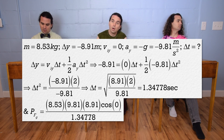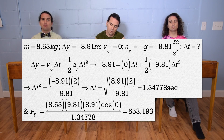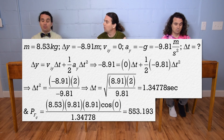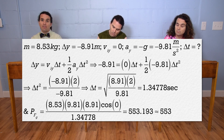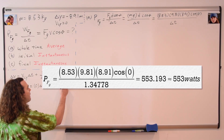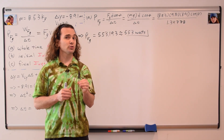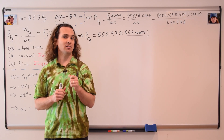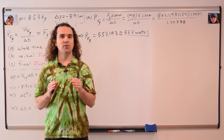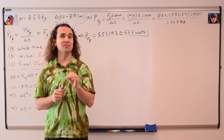Power delivered by the force of gravity equals 553.193, or with three significant figures, 553 watts — joules per second. That is the average power delivered by the force of gravity to the pumpkin the entire time the pumpkin is in free fall. In other words, on average, the earth delivers 553 joules of energy every second to the pumpkin.